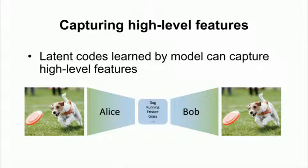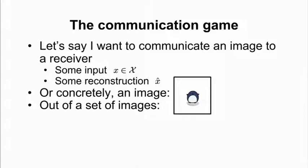And so now that we have a groundwork for what it really means to use this auto encoding framework, we can also think about it in terms of a communication game. So let's say I, as a sender, want to communicate an image to a receiver. So concretely, I have some input x that's drawn from some underlying empirical distribution p data,